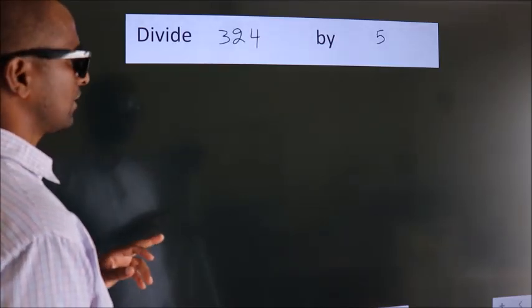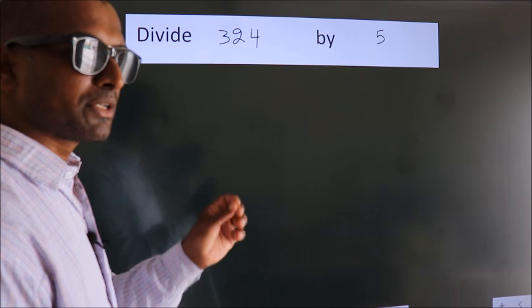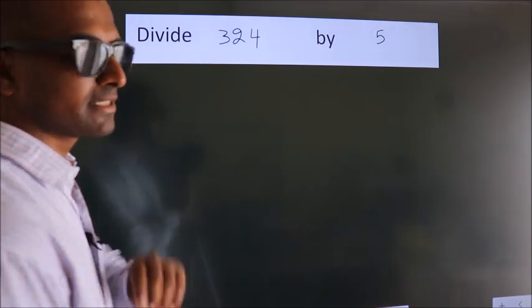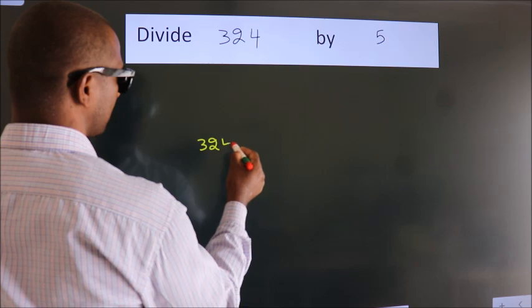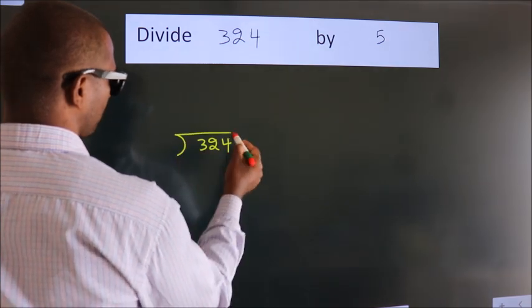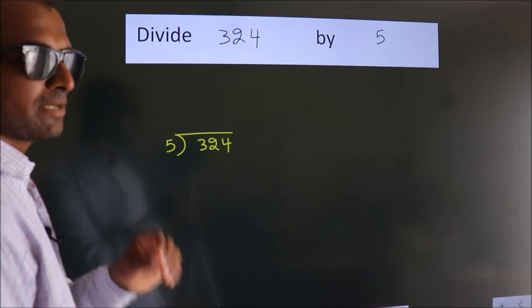Divide 324 by 5. To do this division, we should frame it in this way: 324 here, 5 here. This is your step 1.